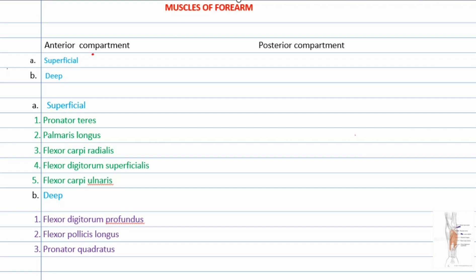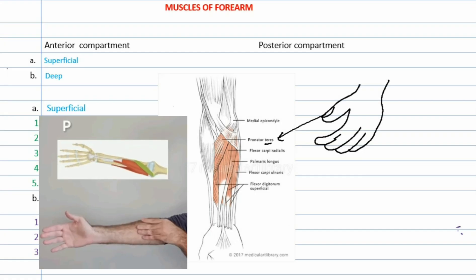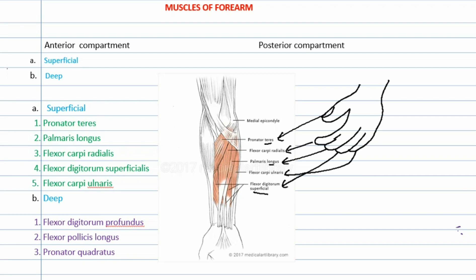Let us memorize the anterior compartment muscles — 5 in the superficial plane and 3 in the deeper layer. From the medial epicondyle, these flexor muscles originate: pronator teres, flexor carpi radialis, palmaris longus, flexor carpi ulnaris, and flexor digitorum superficialis. To remember them, place the palm of your left hand over your right forearm below your elbow — each finger denotes a muscle. The thumb denotes pronator teres, the forefinger denotes flexor carpi radialis, the middle finger (being longer) denotes palmaris longus, the ring finger denotes flexor digitorum superficialis lying in a slightly deeper plane, and the muscle toward the ulnar side denotes flexor carpi ulnaris.